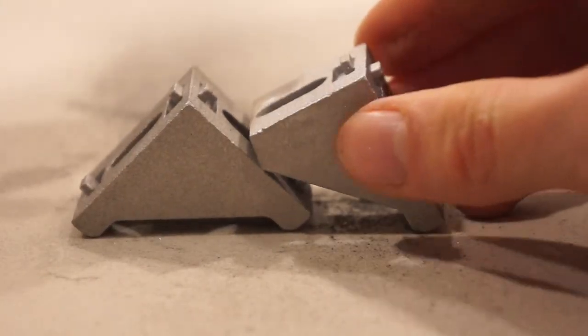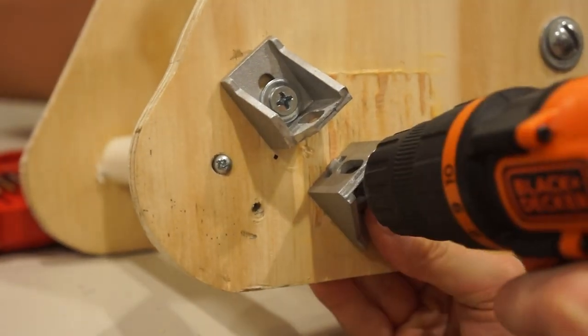We'll need a flat surface to attach these onto, which means we'll have to remove these wooden blocks. Now we can attach the brackets and affix the ball joints.